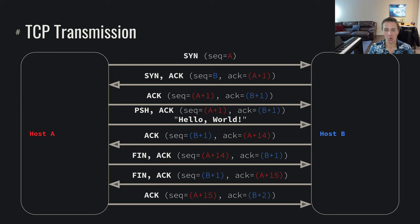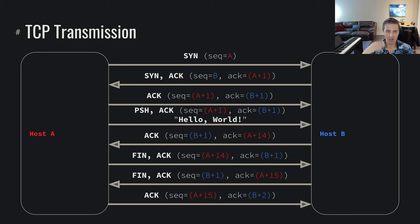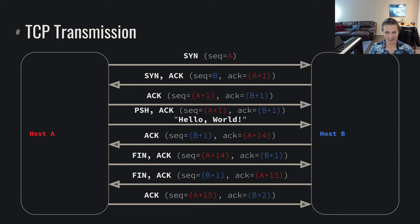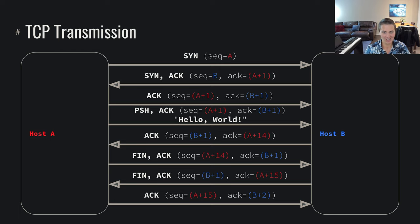This is what a simple 'hello world' being sent looks like in TCP. The critical thing to see is the sequence number walking forward depending on synchronizing, finishing up, or sending data — we're incrementing these sequence numbers and always acknowledging the other side so they can feel confident they've been heard. Host A sends data out into the ether and knows it arrived at host B because host B acknowledges it. That's what it looks like to do a TCP transmission.